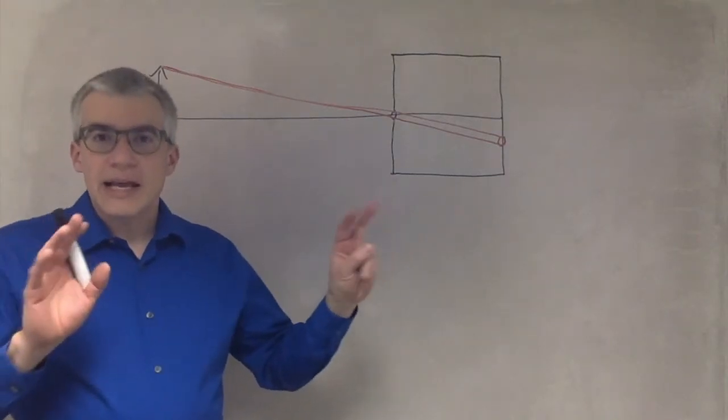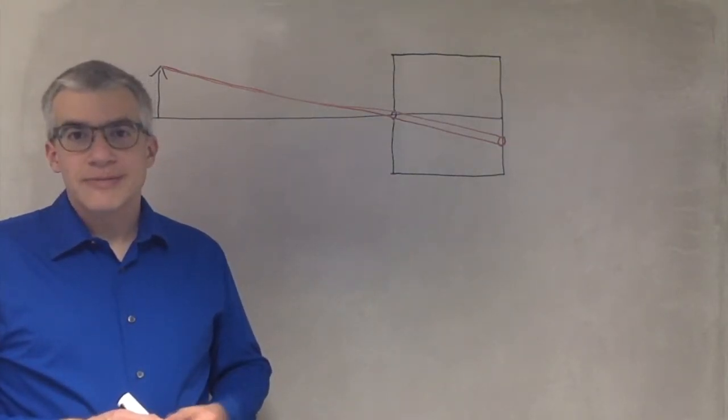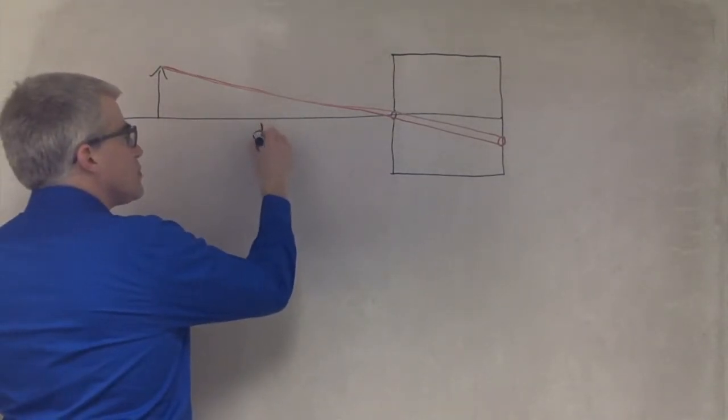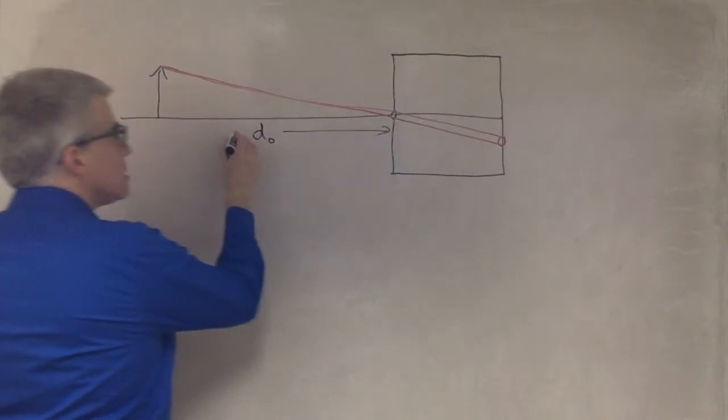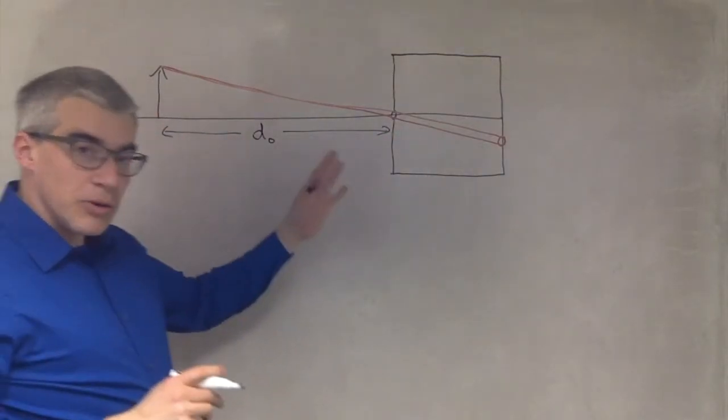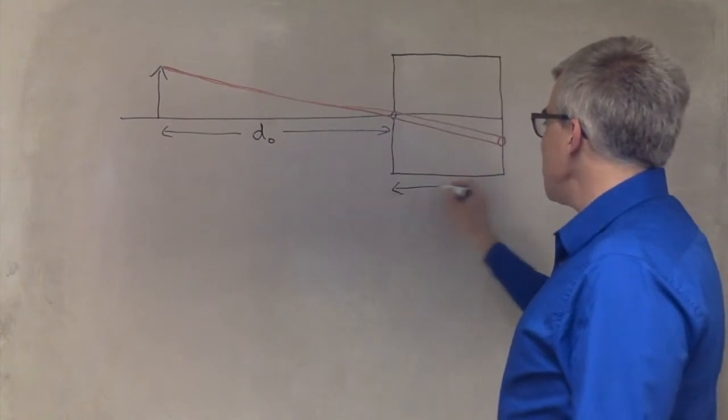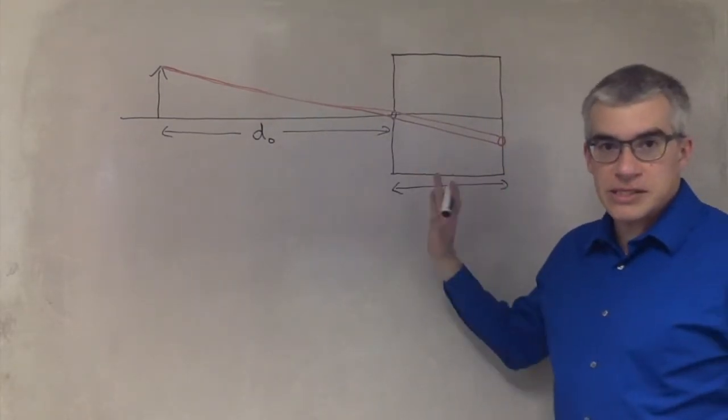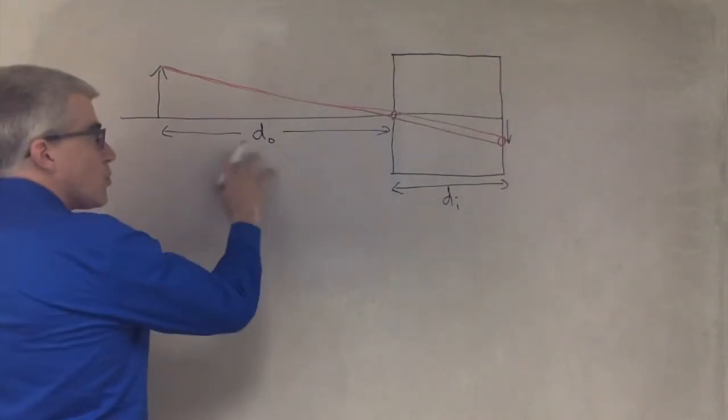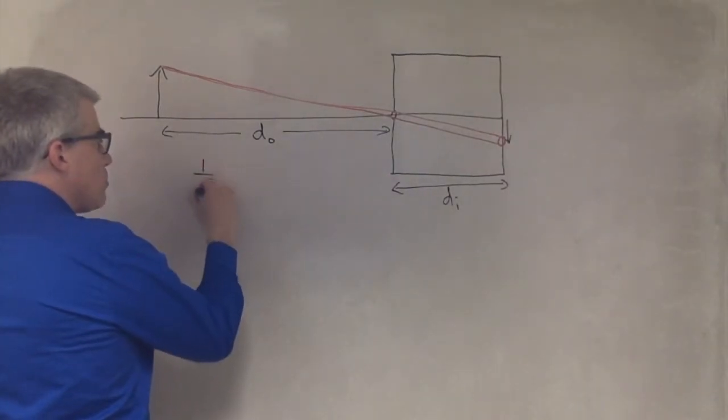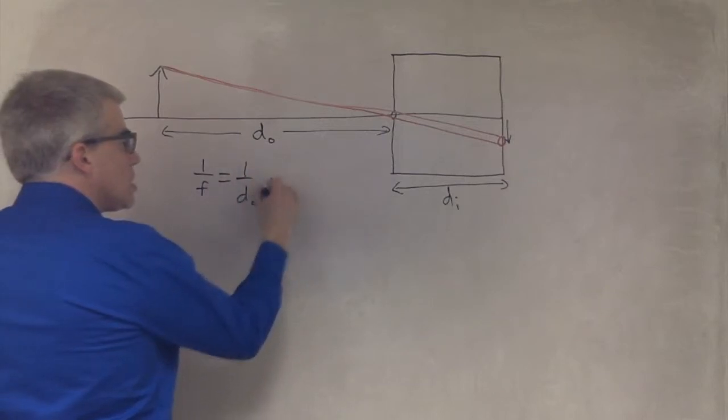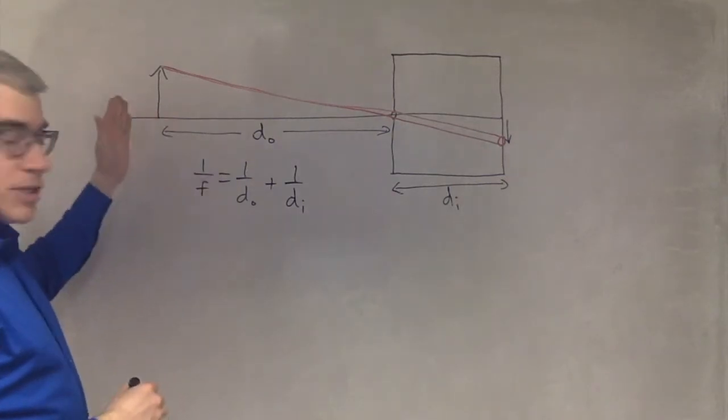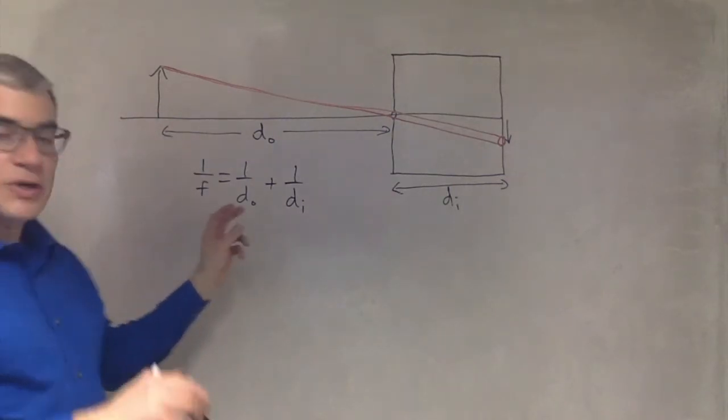What's the focal length of this pinhole camera? Well, it turns out it depends on the object. Because if we count DO as the distance of the object from the pinhole, and we count DI as the image distance to back of the camera, for a given DO and DI, 1 over F is 1 over DO plus 1 over DI. So for a given location, this camera has an effective focal length.